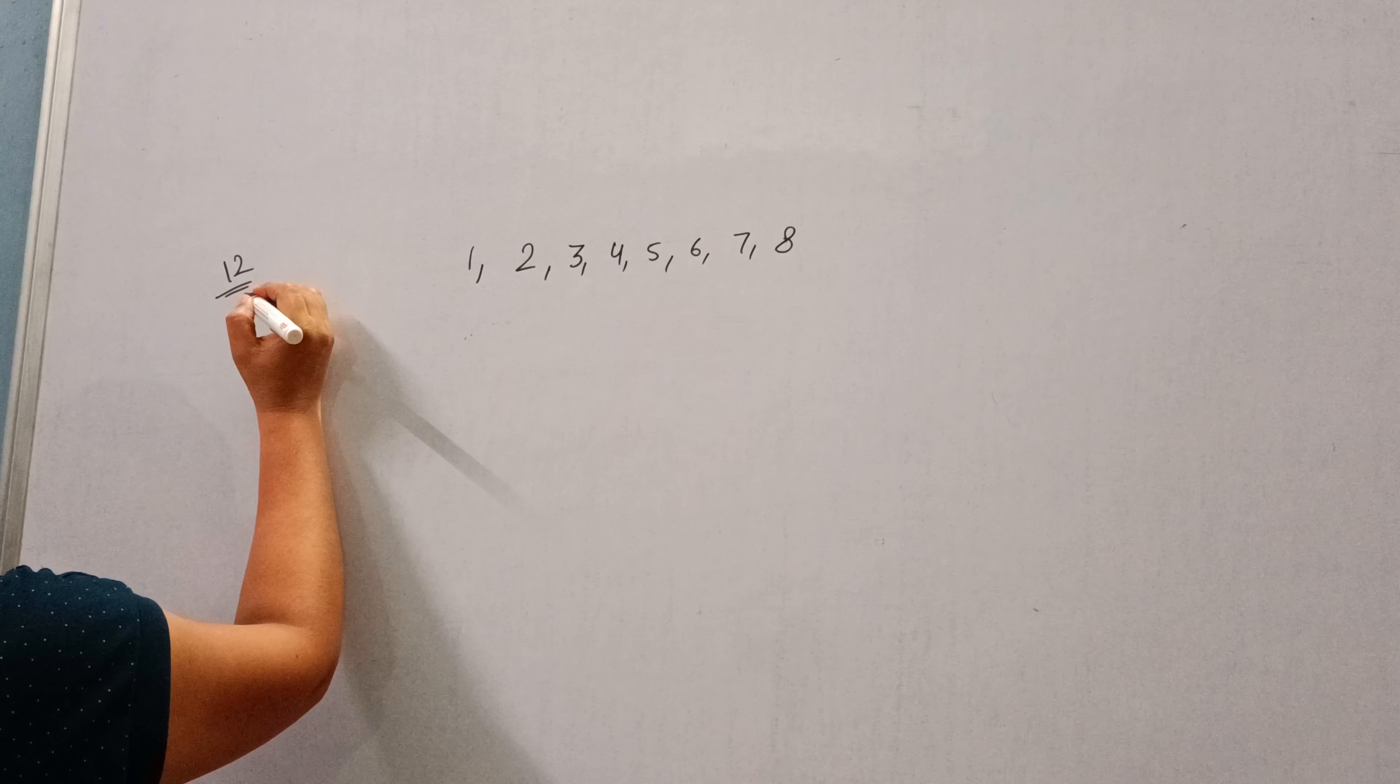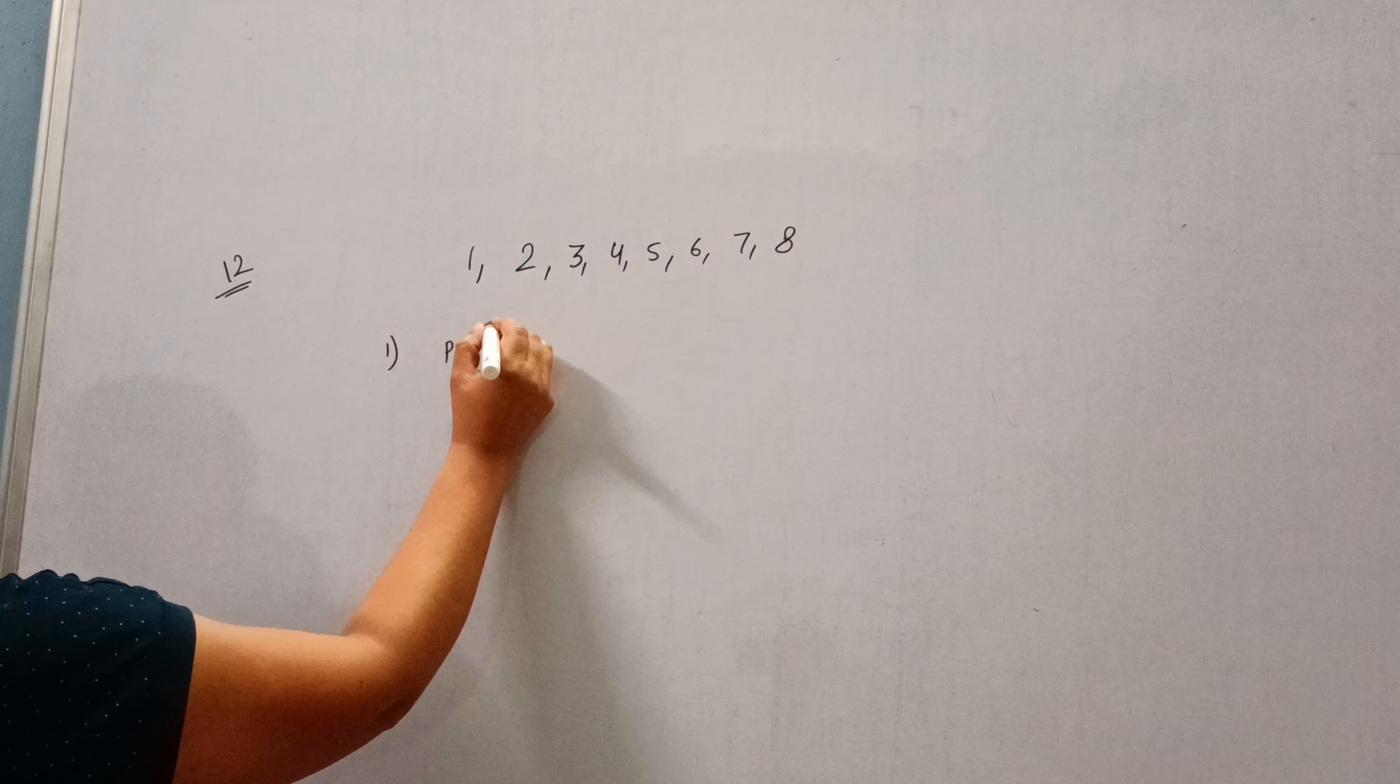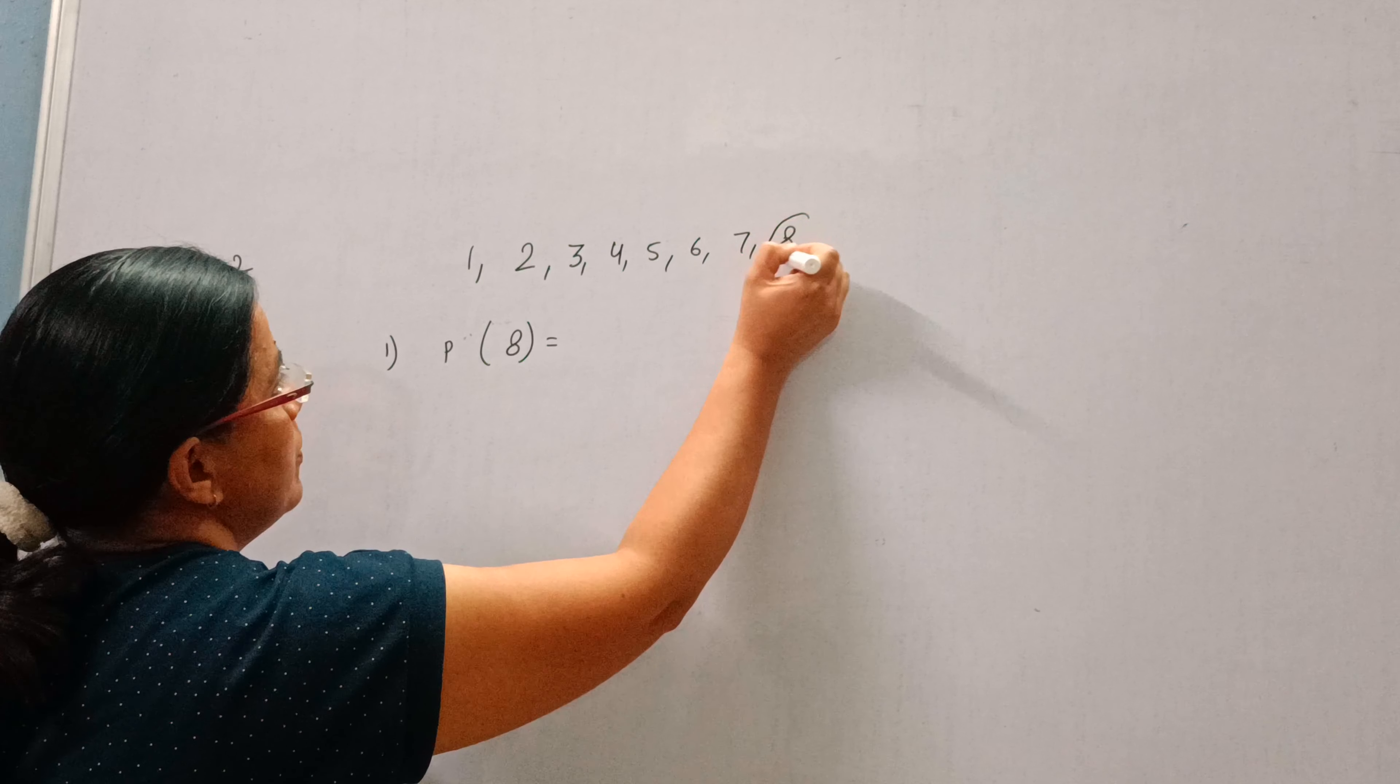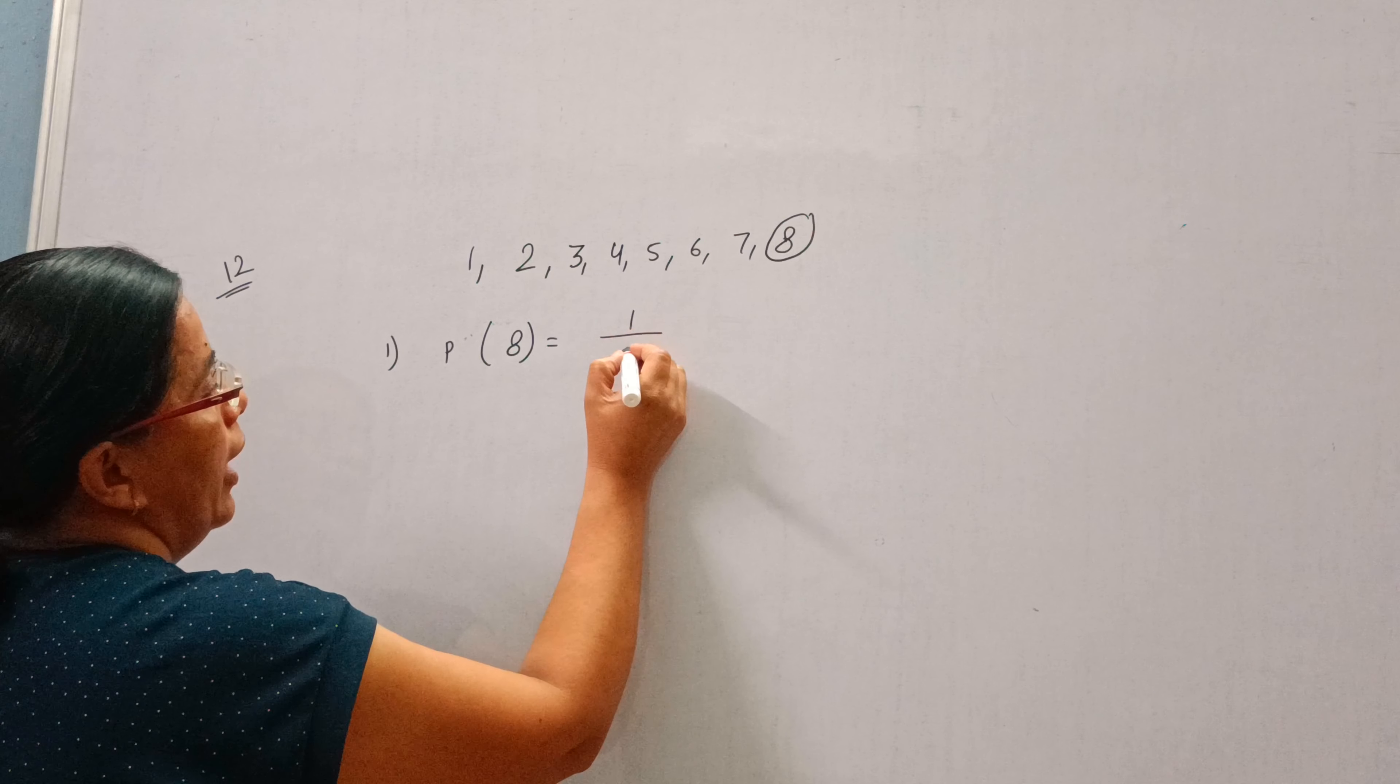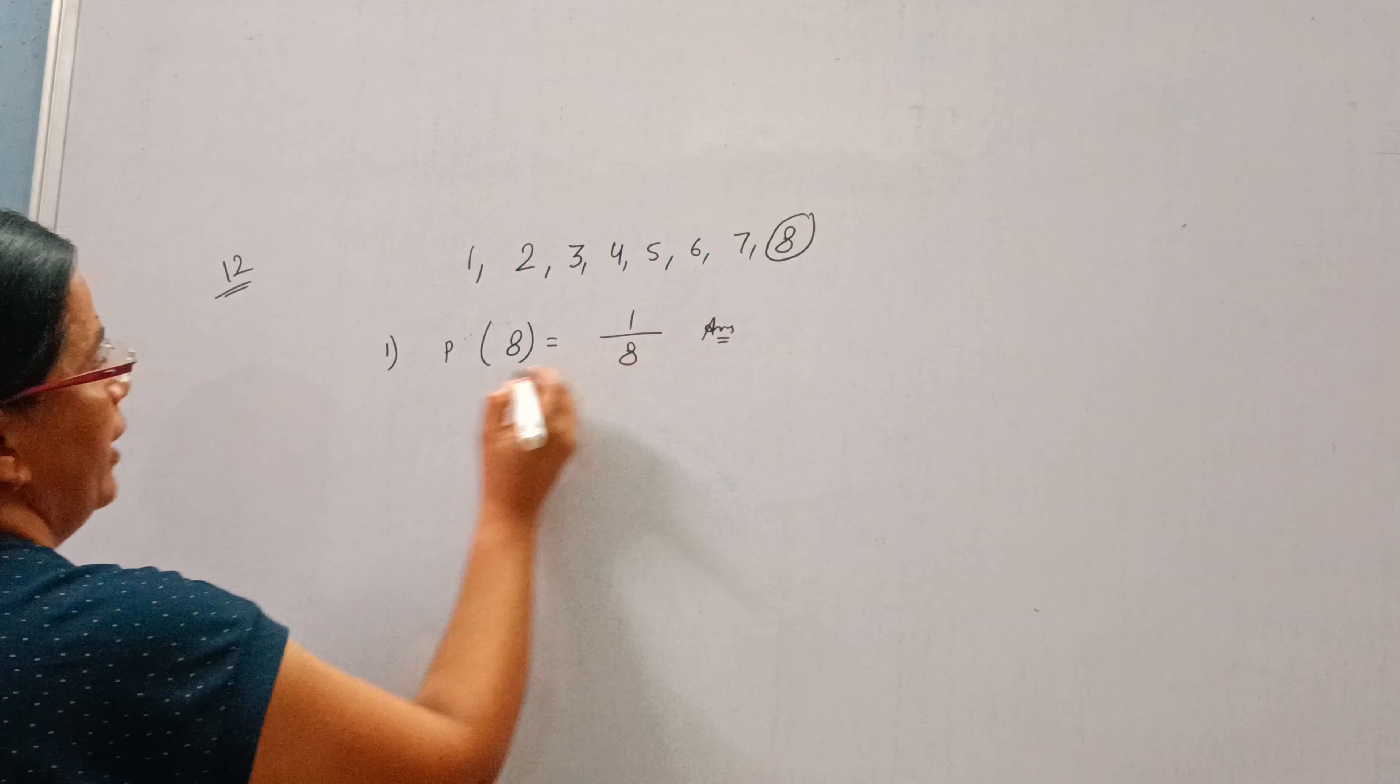These are equally likely outcomes. What is the probability that it will point at 8? In all these 8 numbers, how many times is 8 written? Only 1. So probability is 1 by 8.